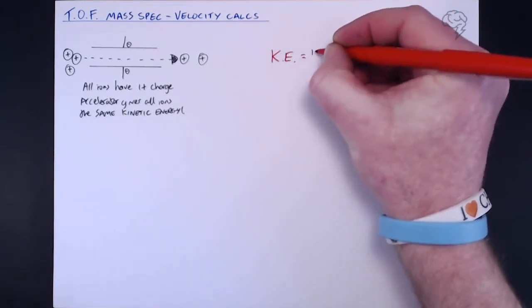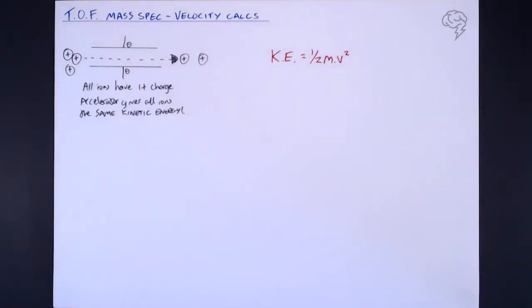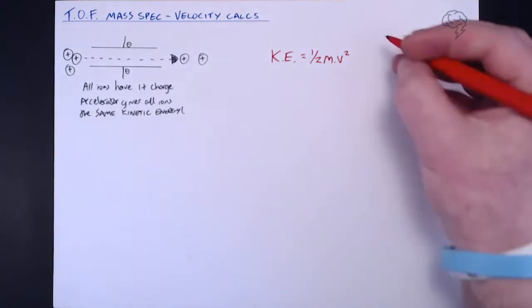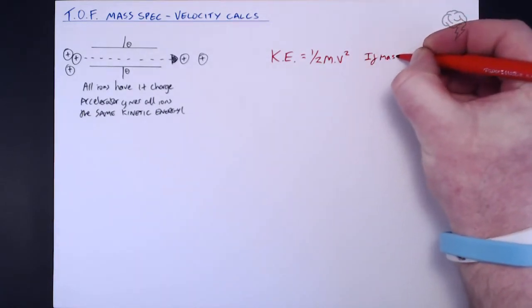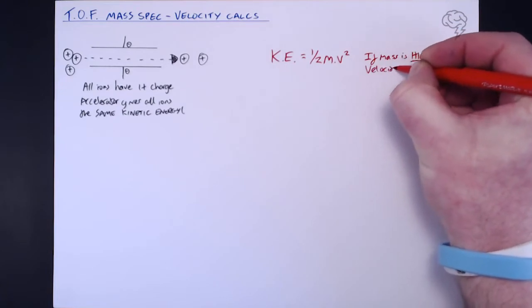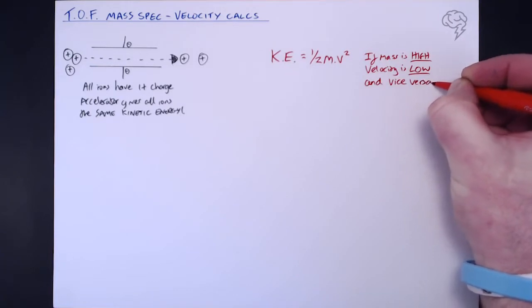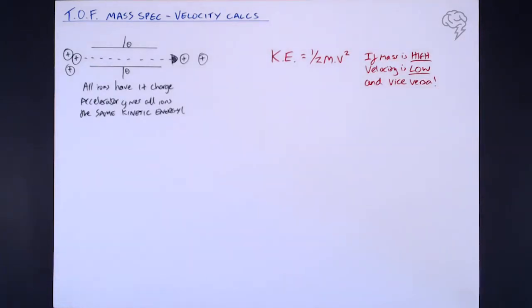Kinetic energy equals half mass times velocity squared — that's the relationship between kinetic energy, mass, and velocity. Because they've all been given the same kinetic energy, if the mass is high, the velocity is low, and vice versa. So because they've all been given the same kinetic energy, the heavier ones don't travel as fast; the lighter ones will travel faster.